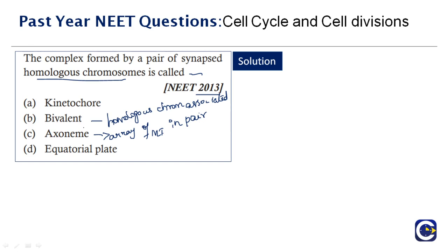During zygotene, the second stage of meiosis 1, homologous chromosomes start pairing together to form the synaptonemal complex. The complex formed is called bivalent, also known as tetrad. So the correct answer is option B, bivalent.